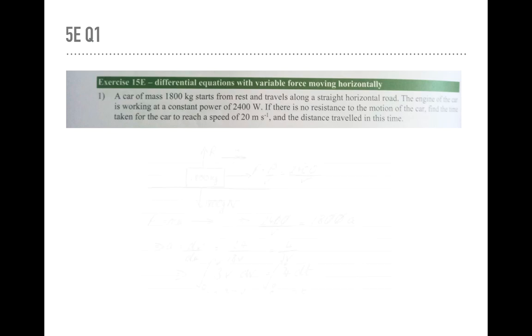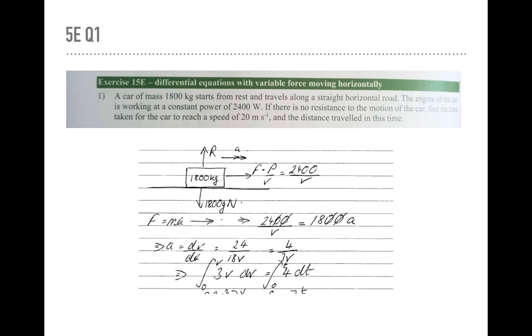means I'm going to have to use v dv dx as well. So let's start with a diagram and I would suggest starting with a diagram here. There's a block, draw the forces acting on it. It's got a mass, it's got a weight. If it's on the surface there's a reaction up. There's a single horizontal force and that force is given by P over V which is 2400 over V.